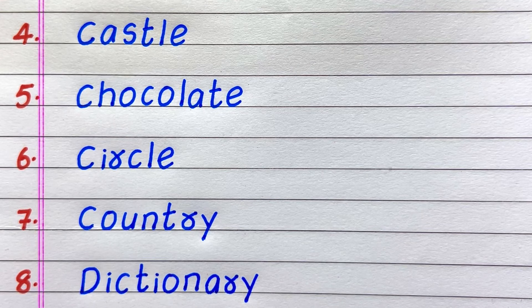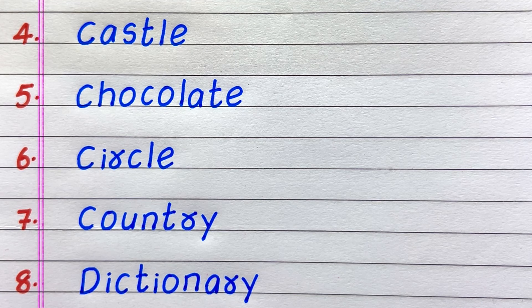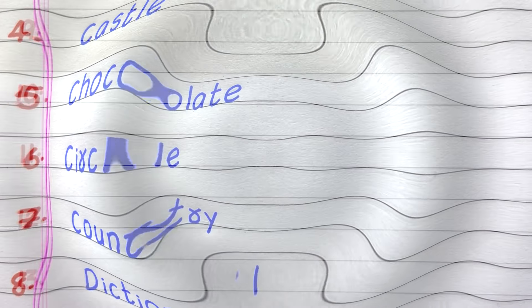Fourth is castle, spelling C-A-S-T-L-E. Fifth, chocolate, C-H-O-C-O-L-A-T-E. Sixth, circle, C-I-R-C-L-E. Seventh, country, C-O-U-N-T-R-Y. Eighth, dictionary, D-I-C-T-I-O-N-A-R-Y.